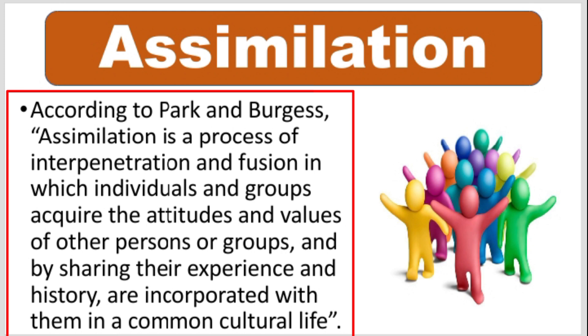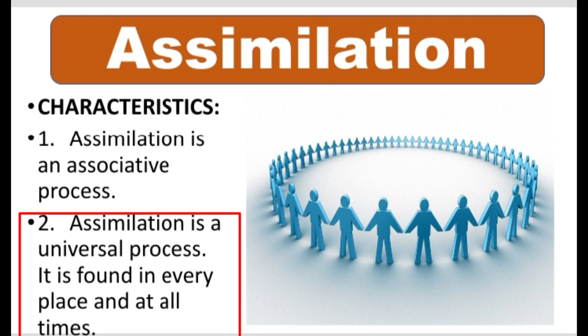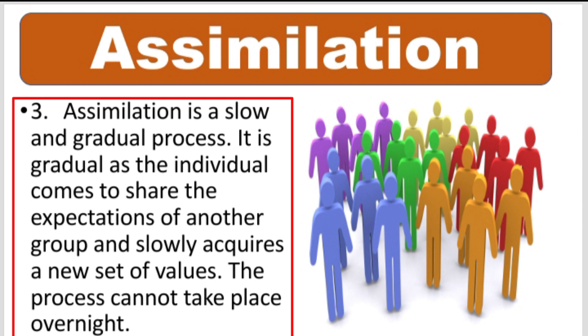If we talk about some important characteristics of assimilation: first, assimilation is an associative process — it is a process related to friendship or companionship. Second, assimilation is a universal process, which we get in every society, every place, and at all times. Third, assimilation is a slow and gradual process.